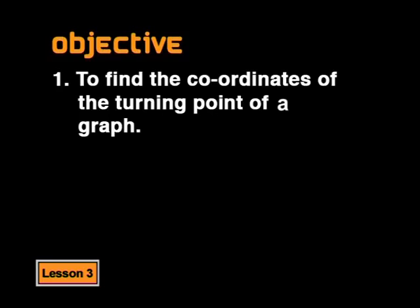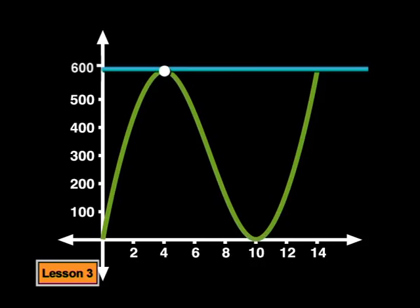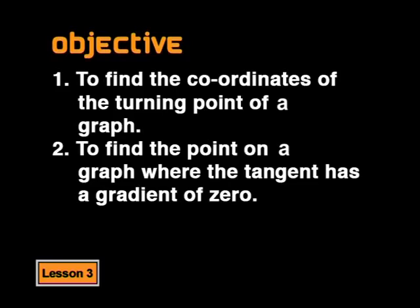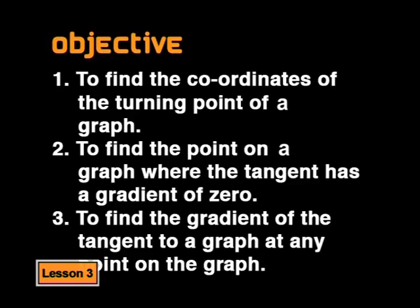Let's quickly go over how our problem has developed. Our first objective was to find the coordinates of the turning point of a graph. The y value of this point would then give us the maximum volume of our box, and the x value would give us the length of the side of the box we would need to get the largest volume. We then realized that we would know the coordinates of the turning point when we knew where the gradient of the tangent to the graph was equal to zero. And now the more general problem is to find the gradient of the tangent to the graph at any point — a challenge so tough that mathematicians had to invent new mathematics to solve the problem.